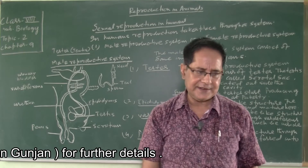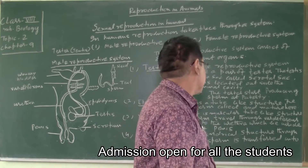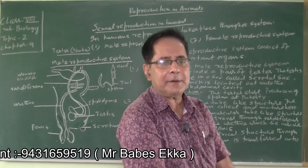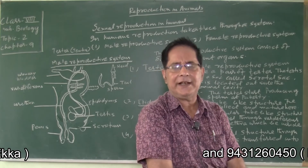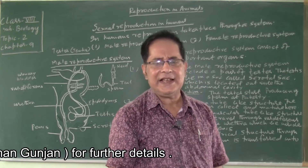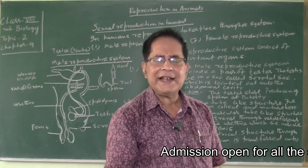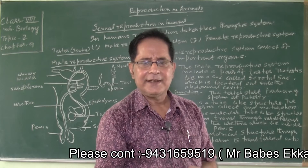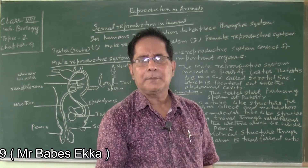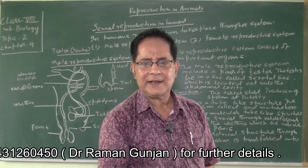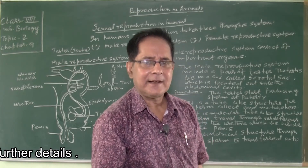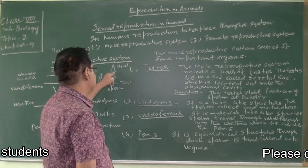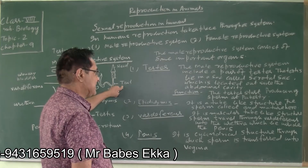What is the function of testis? The testis produces sperm at puberty. When a male reaches the age of about 13 to 14 years, this age is called puberty. At this stage, the testis starts producing the male gamete, sperm. Sperms are the male gamete. It is a motile structure — it can move. It has two parts: head and tail.